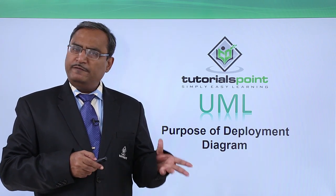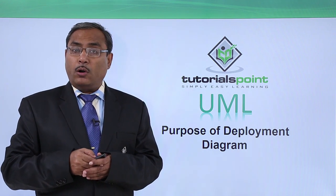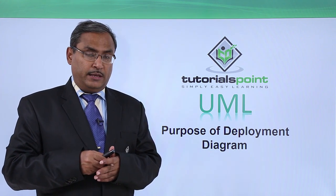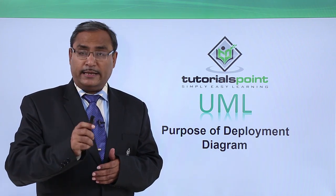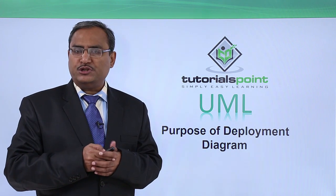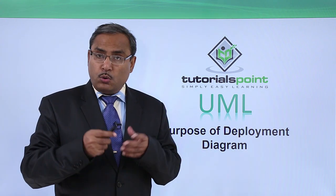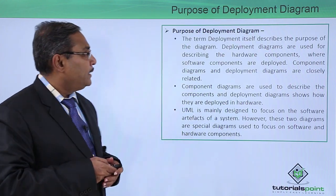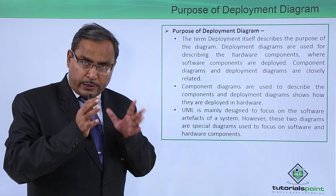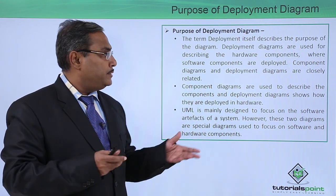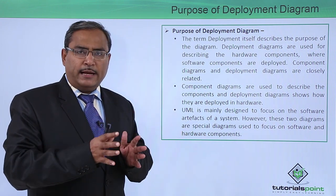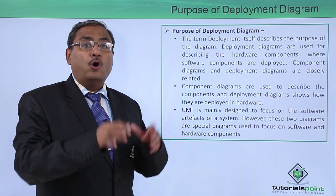In the previous video we discussed the component diagram, which shows all the component lists, how these components are connected with each other, and what the different artifacts are. In a deployment diagram, we describe how these components will get deployed on different devices, processors, and machines. That is the main purpose of the deployment diagram. The term deployment itself describes the purpose: deployment diagrams are used for describing the hardware components where the software components will be deployed. We must know which components will be deployed on which servers or machines.